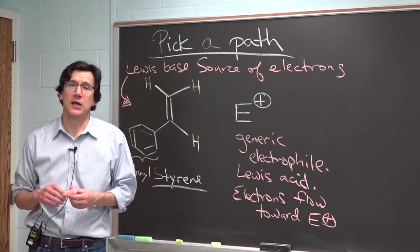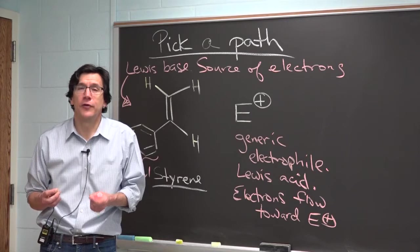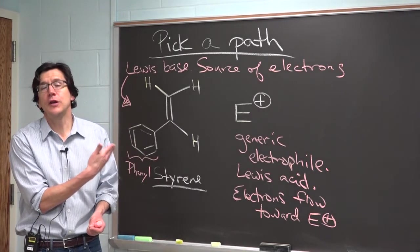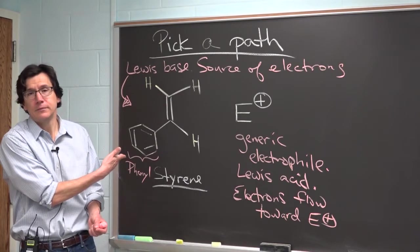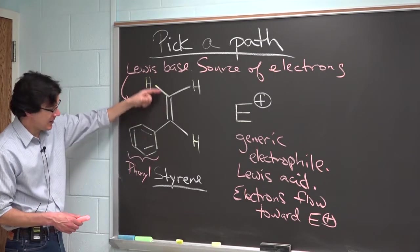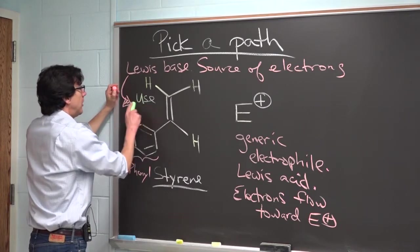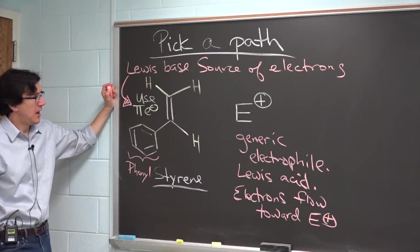The next question for you then is where do you start pushing the arrows from on the styrene molecule? Where are the nucleophilic electrons from the Lewis base? The most available electrons are the pi electrons. So use the pi electrons.